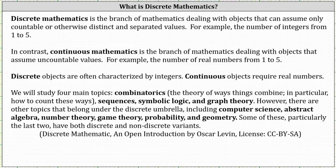In contrast, continuous mathematics is the branch of mathematics dealing with objects that assume uncountable values. For example, the number of real numbers from one to five. Remember, there are an infinite number of real numbers from one to five.